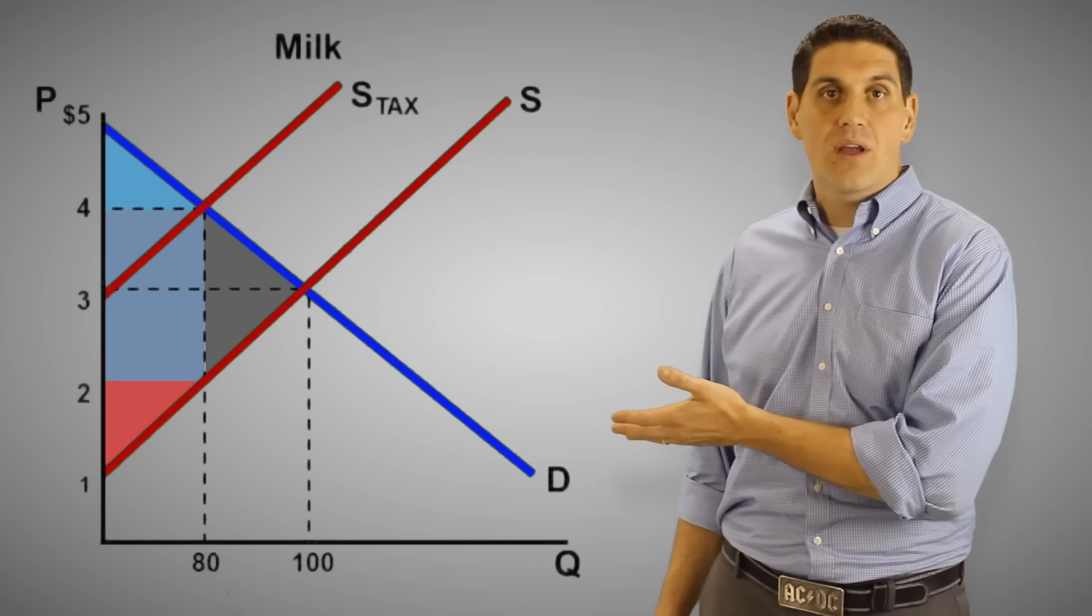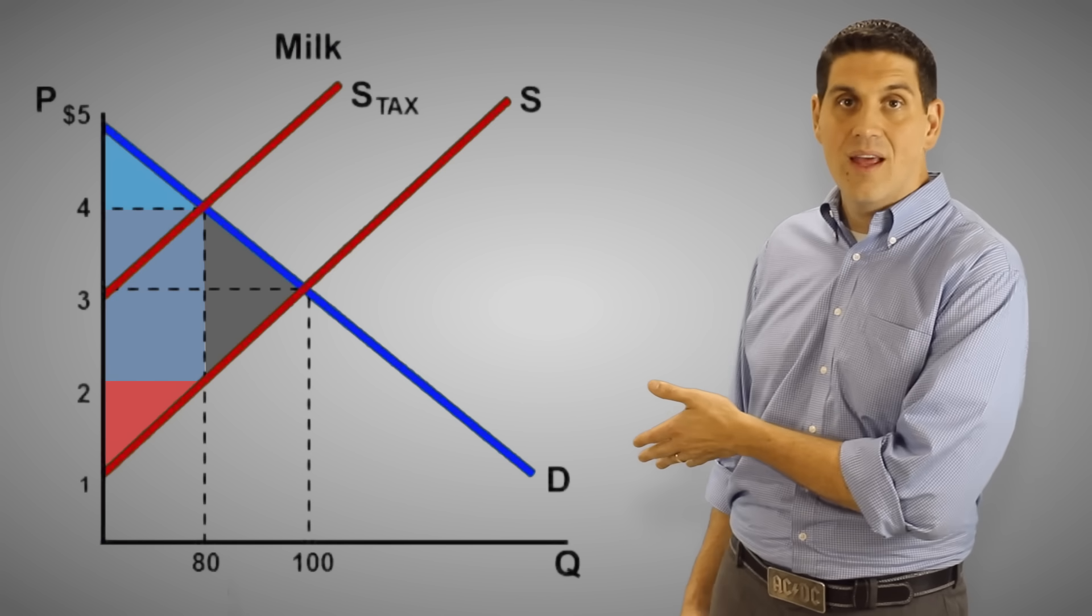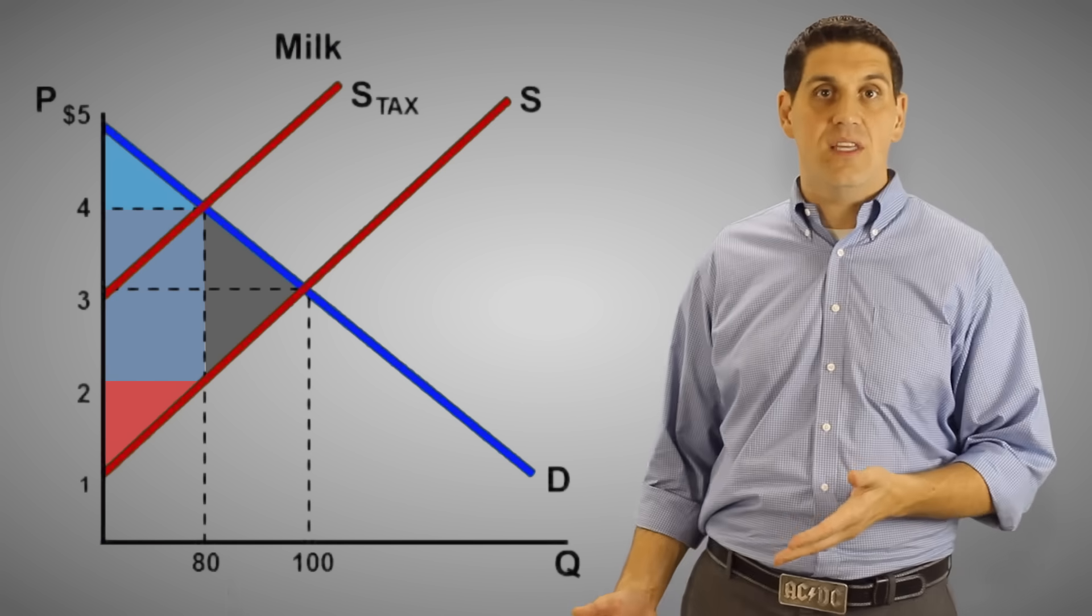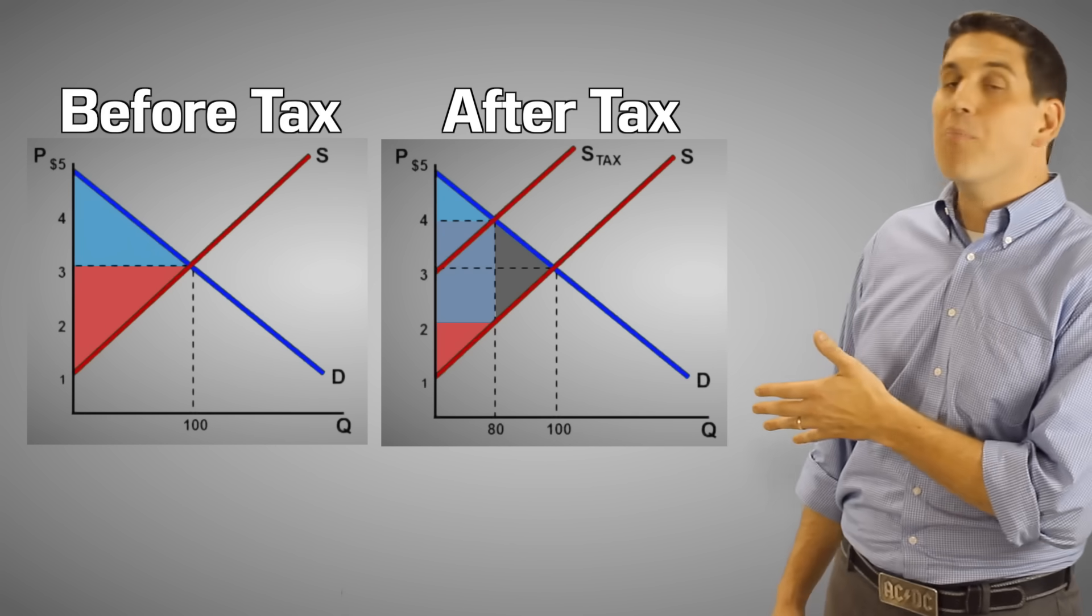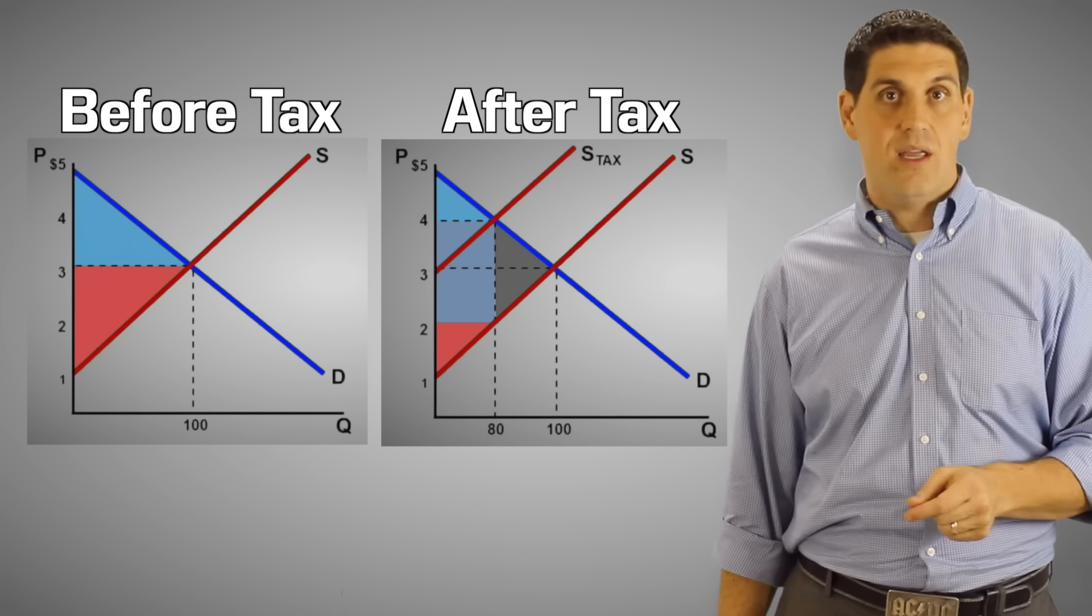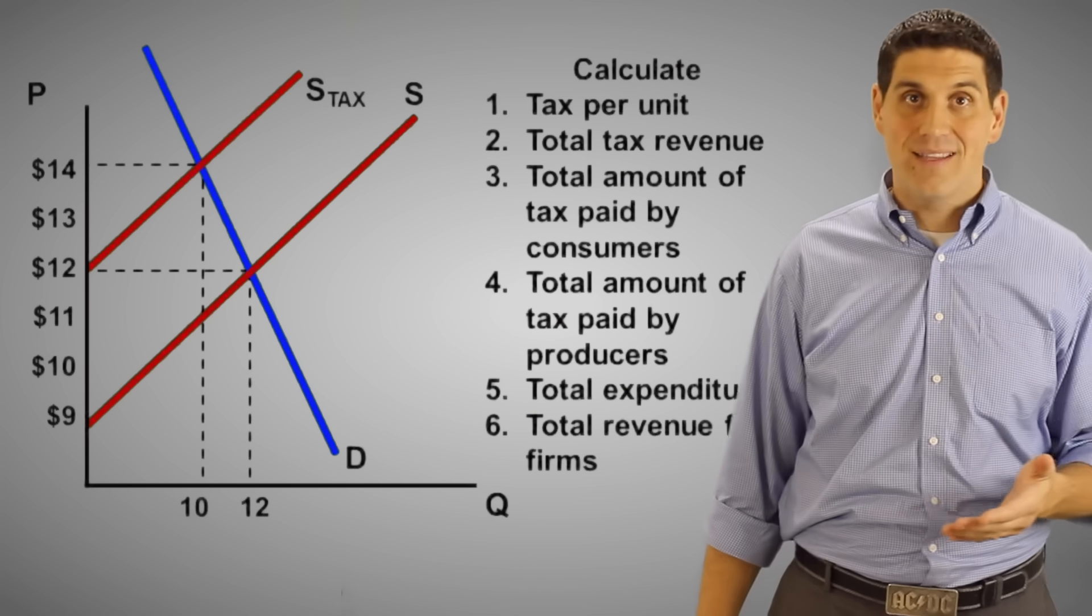If the government taxes something like milk and the quantity the society actually wants, the socially optimal quantity is 100 and they tax it, it's going to decrease efficiency. It's going to cause a decrease in total surplus. So taxes on some products will lead to inefficiency. Let's try it again, except this time I've changed the slope of the demand curve. I've made it more inelastic.